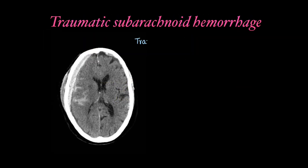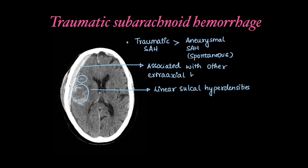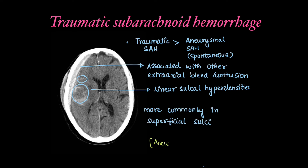Traumatic subarachnoid hemorrhage is more common than aneurysmal or spontaneous SAH. They appear on imaging as linear sulcal hyperdensities along the site of injury and can be associated with other extra-axial bleeds or contusion. Hyperdensities are more commonly seen in superficial sulci, whereas aneurysmal or spontaneous SAH are more visualized in the basal cisterns.